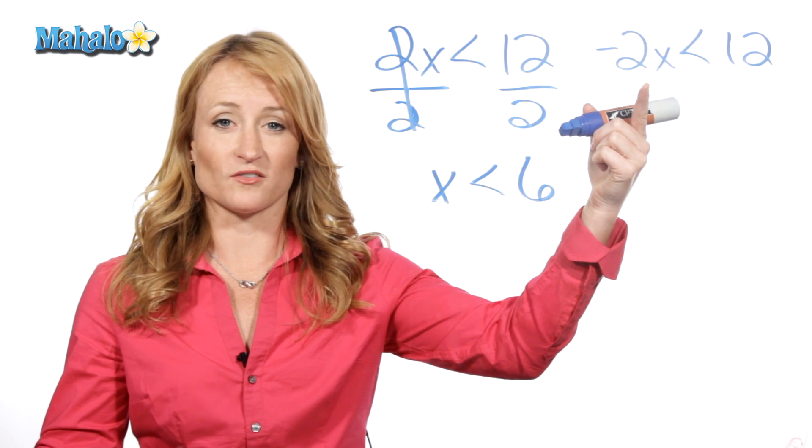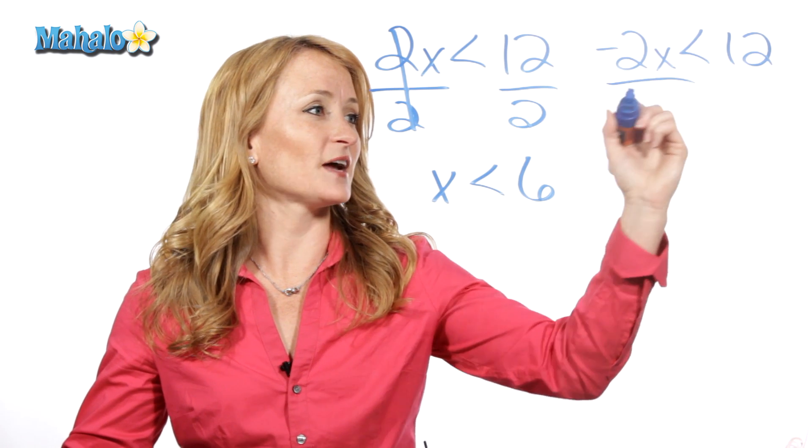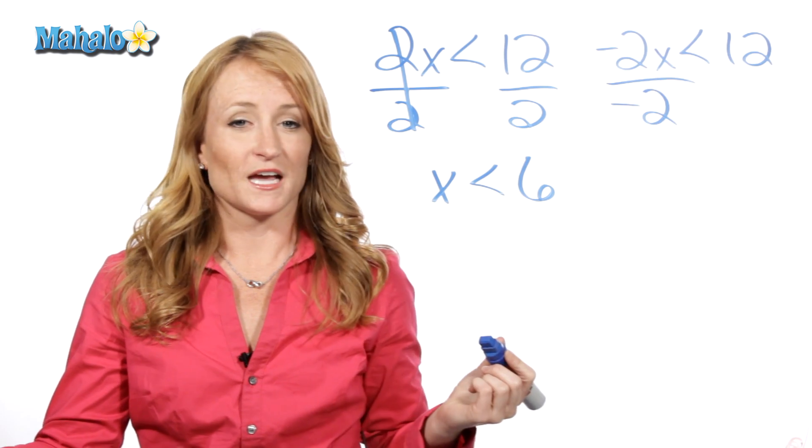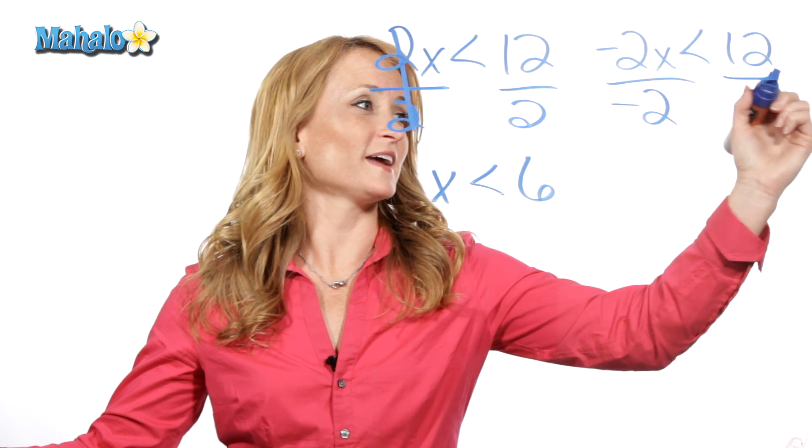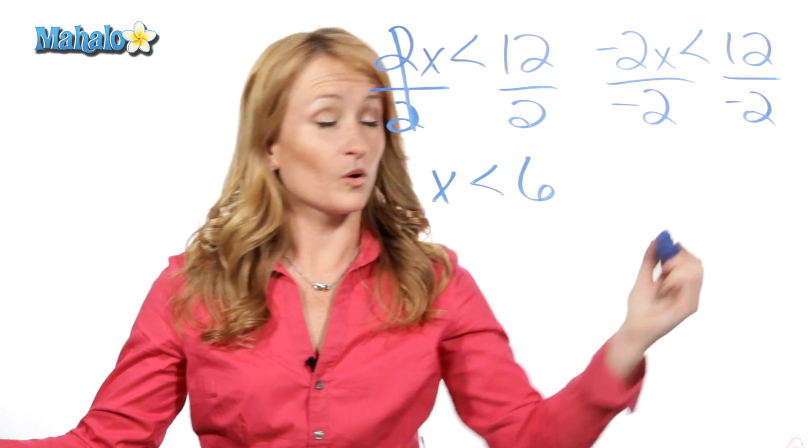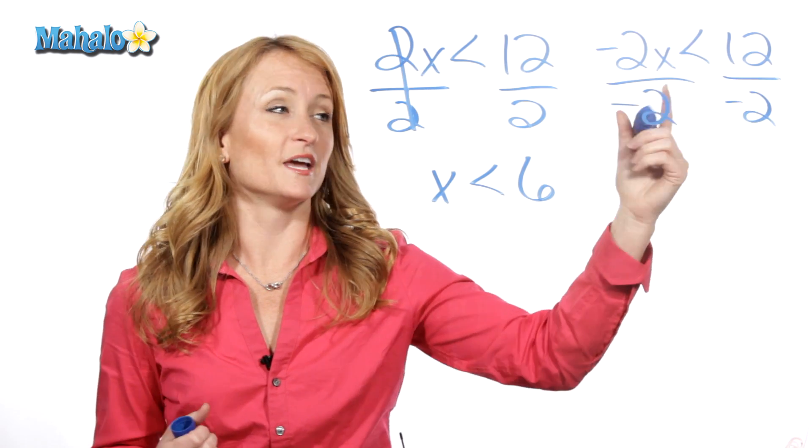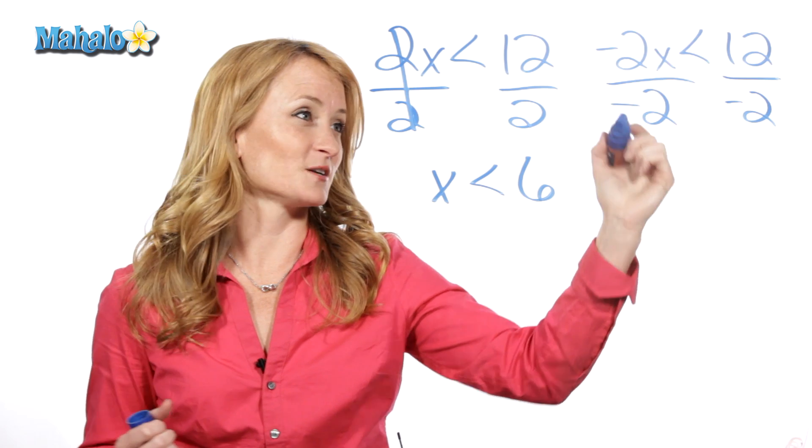However, here in solving for x, we would need to divide by negative 2. And the rule is, whenever you're dividing by a negative or multiplying by a negative with an inequality, you must flip that inequality. Here's what I mean.